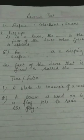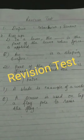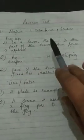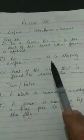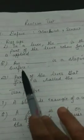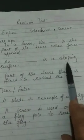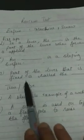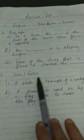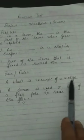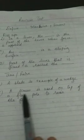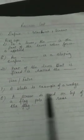Notes or exercises you have to do in the notebook. One: Define machine and screw. Fill in the blanks: In a lever, the dash is the part of the lever when force is applied, and dash is the sloping surface. The part of the lever that is fixed is called a dash. True or false: A blade is an example of a wedge. A screw is used on top of a flag pole to raise the flag.